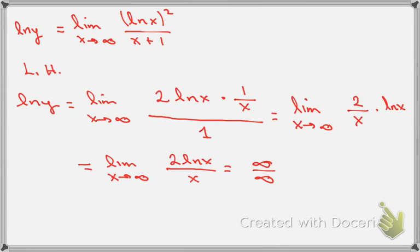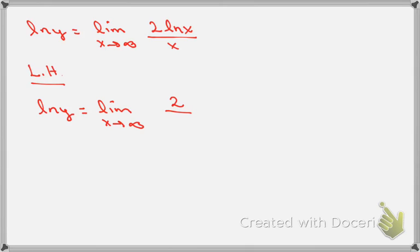Just to make sure we're on the same page: we got ln y equal to the limit as x goes to infinity of 2·ln x · (1/x) divided by 1, from applying L'Hôpital's Rule. After simplification, that's the limit as x goes to infinity of 2·ln x over x, which is infinity over infinity — an indeterminate form again. So we apply L'Hôpital's Rule one final time.